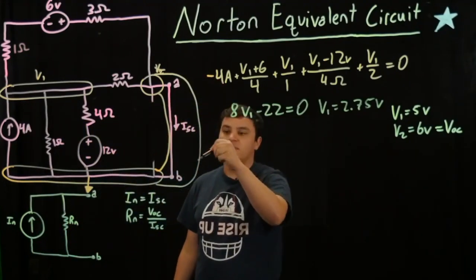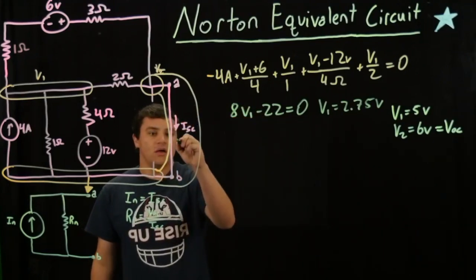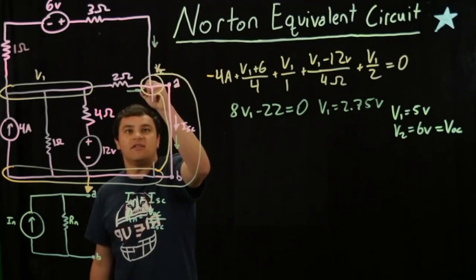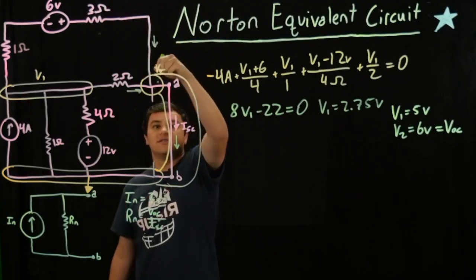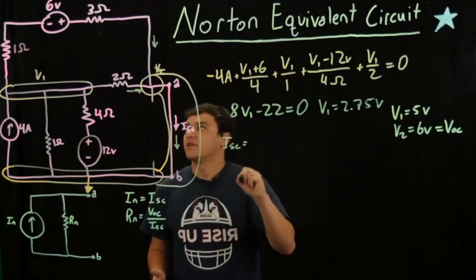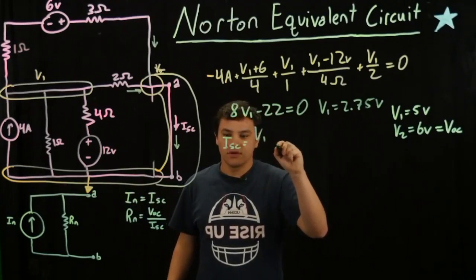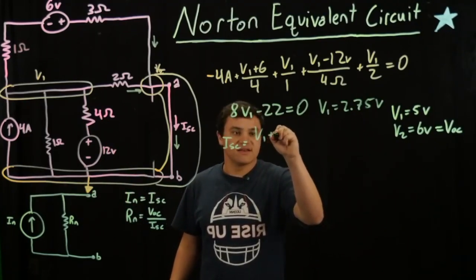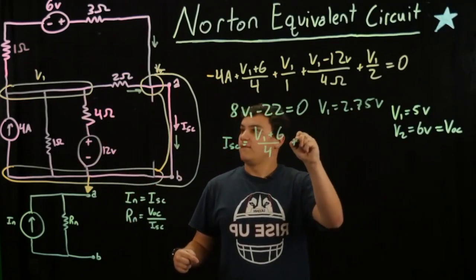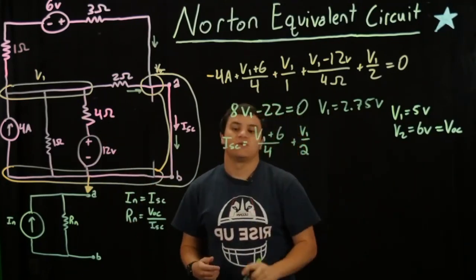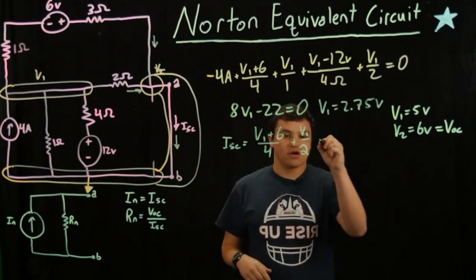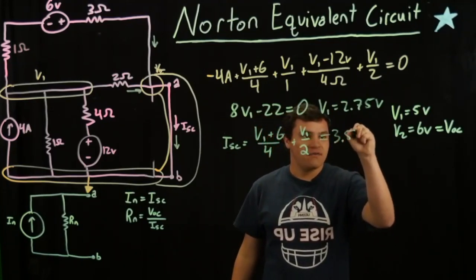We're looking for the short circuit current across A to B. From Kirchhoff's current law, this current equals the current flowing through this branch plus the current in this branch, since those two currents sum to that current. So Isc equals V1 plus 6 over 4 ohms, summed with V1 over 2 ohms. Using V1 equals 2.75 volts, we get a short circuit current of 3.56 amps.